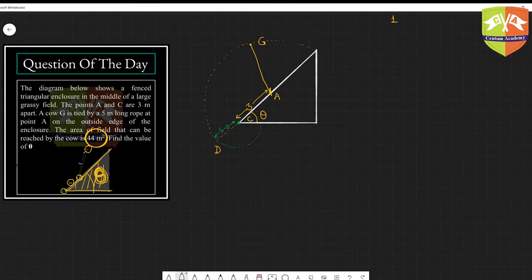I have drawn a simple diagram. A is the center and AG will be five meters, because the rope length is five. So this side is the enclosure, this is extending this side also. The area which I'm going to shade now is what the cow will be able to reach.